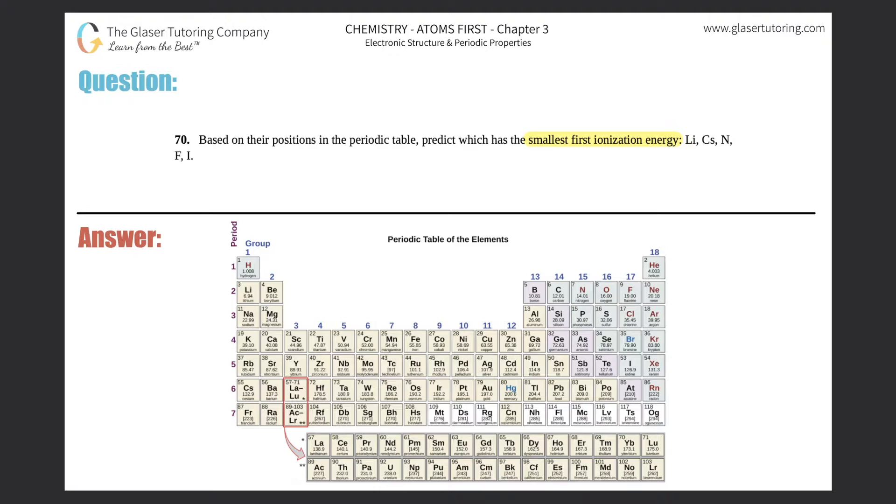If you want more practice, check out that problem. But what is ionization energy? Ionization energy is the energy needed to remove an electron. When you remove an electron, you become a positively charged atom—a cation. Ionization energy always refers to removing electrons, never gaining them.